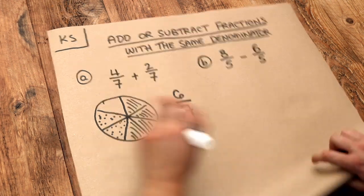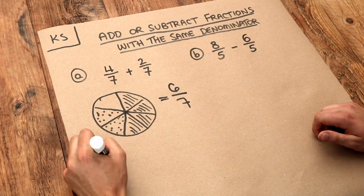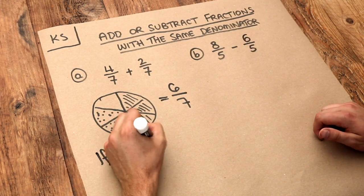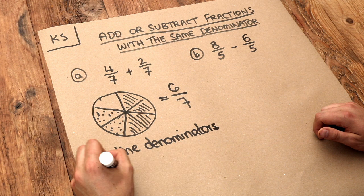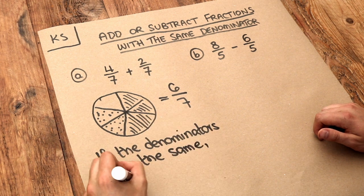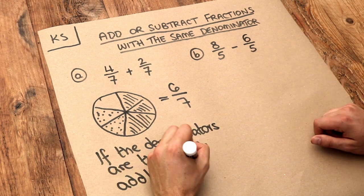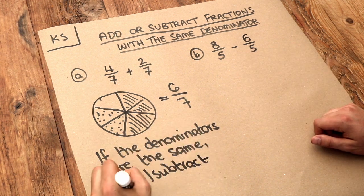So what we need to do: if the denominators are the same, then we just add or subtract — in this second case — the numerators.